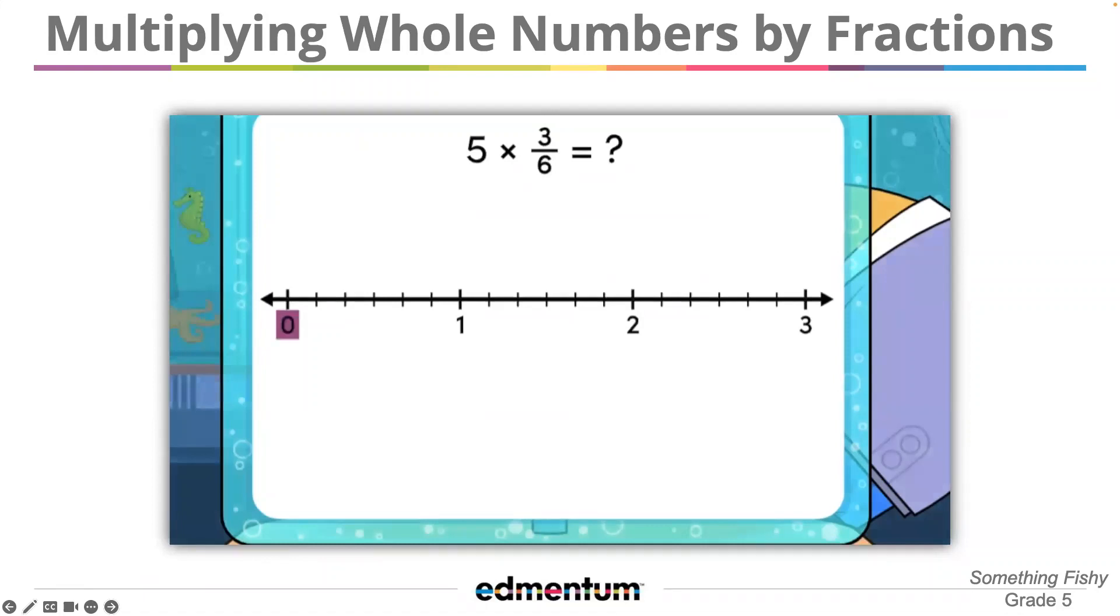Start at zero. Here is one jump of three-sixths. Two jumps of three-sixths. Three jumps. Four jumps. Five jumps. This number line shows five groups of three-sixths.